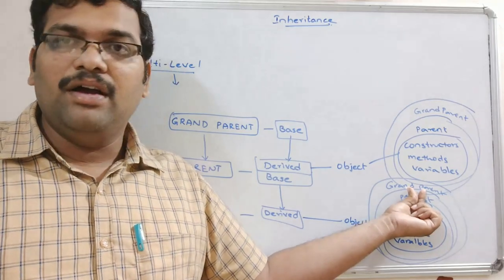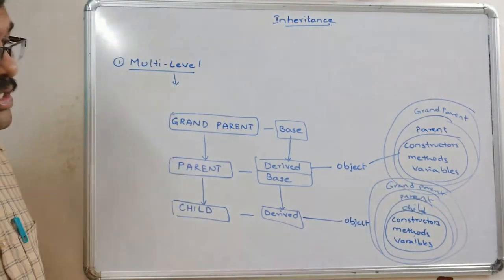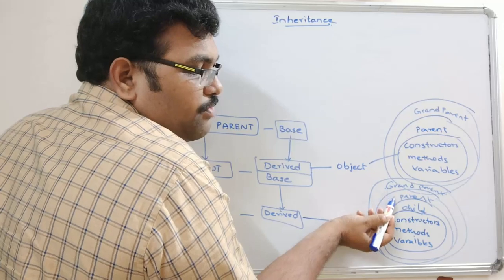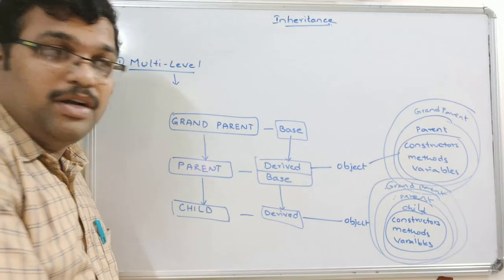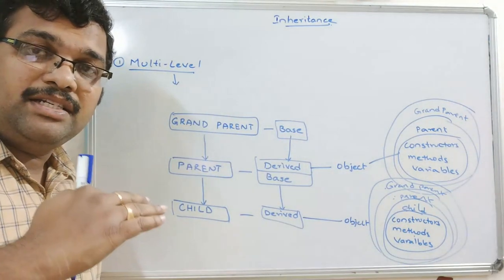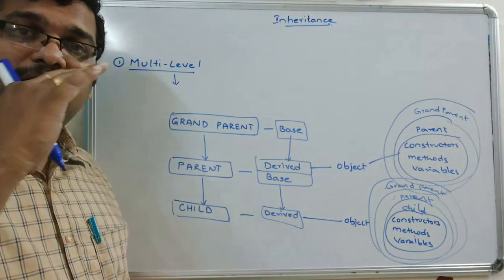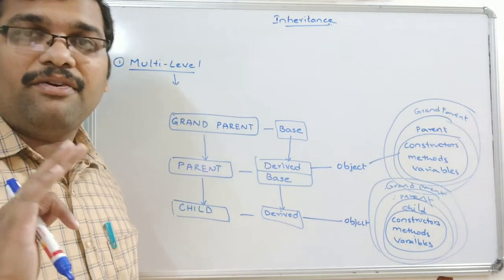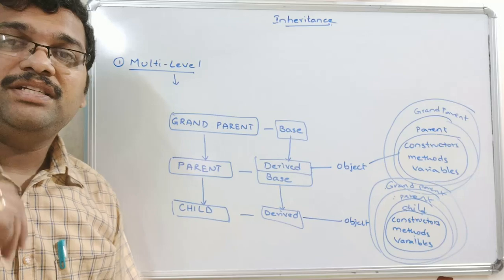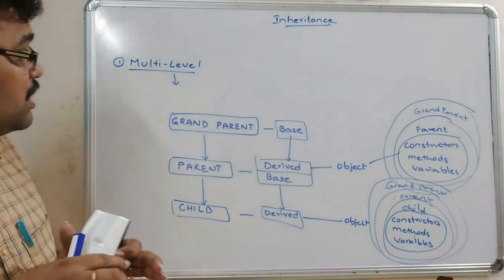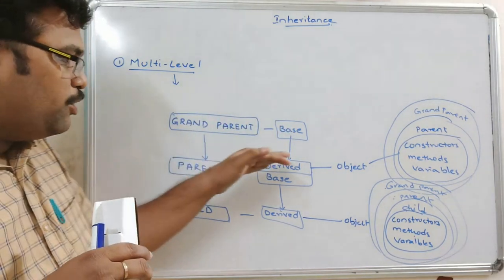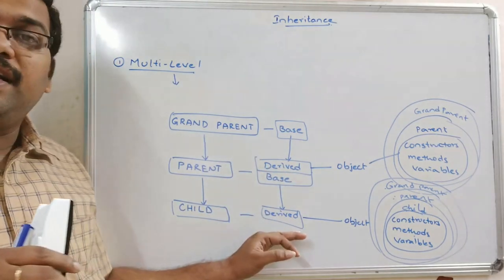However, the parent cannot access the variables and methods of child, and grandparent cannot access the variables, methods, and constructors of parent. The derived class object can access the methods and variables of parent, but the base class object cannot access the variables of the derived class. In a level-wise hierarchy — grandparent, parent, and child — grandparent is only a base class, parent is both derived and base, and child is only the derived class.